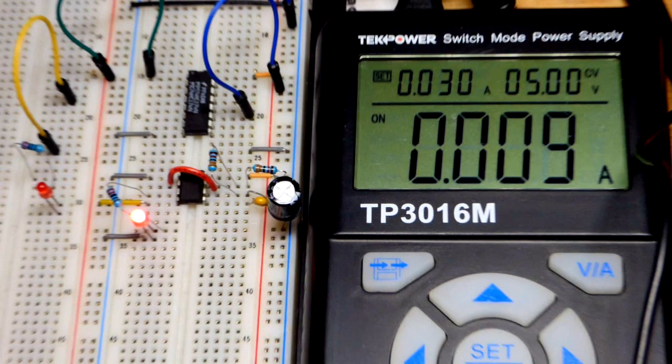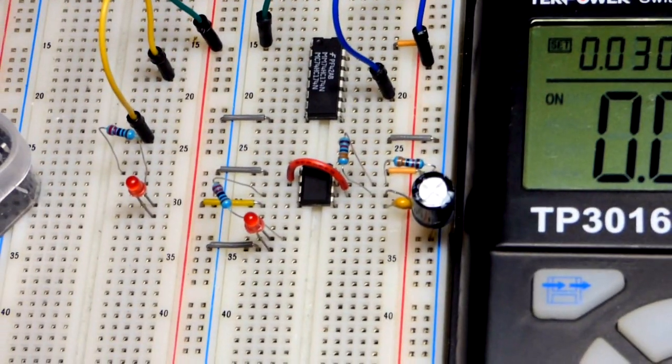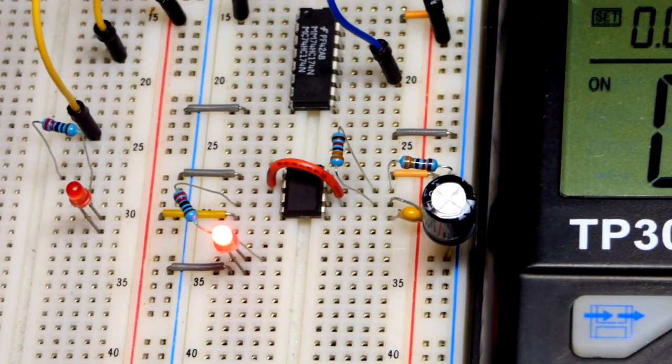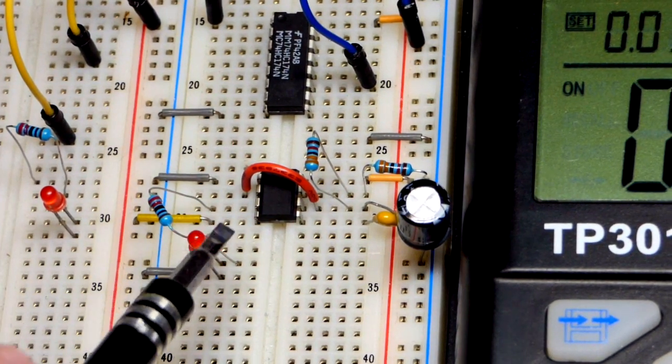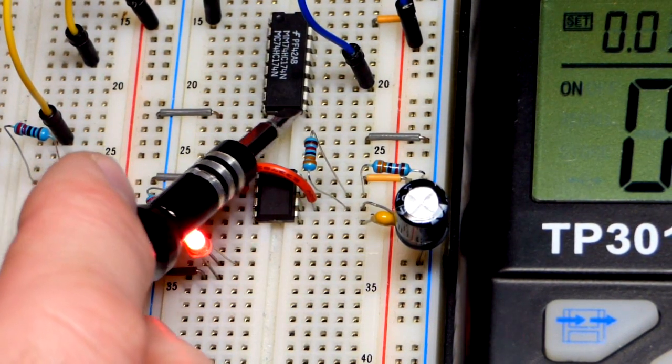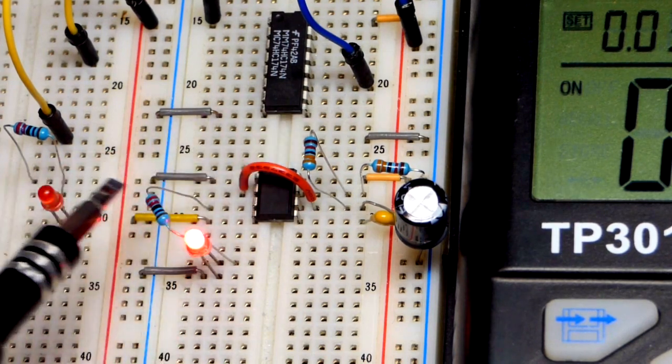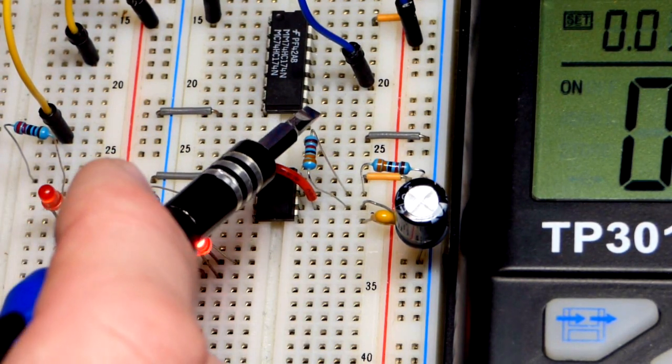First off, this integrated circuit—the flip-flop version—each one responds to the clock right there. The signal we're going to give the clock is going to come from the output of this 555 timer.